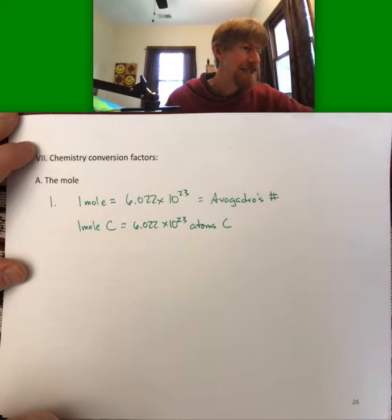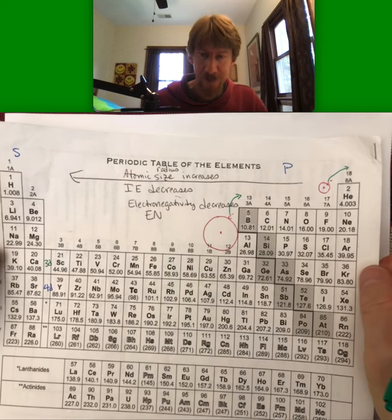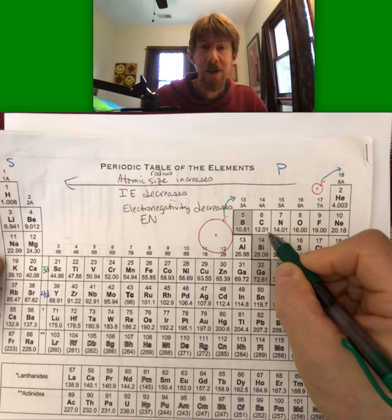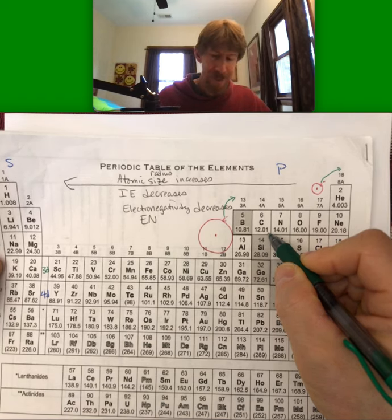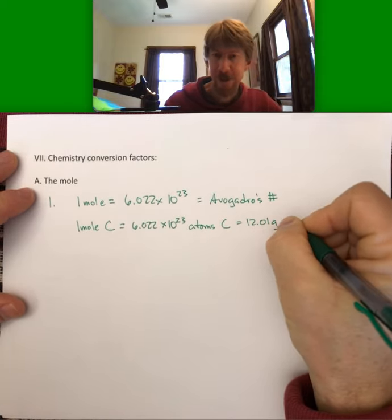You can see that these two things are equal to each other, and if you look at your periodic table, the 12.01 is also the number of grams per mole. I'm going to add that in here, grams carbon.